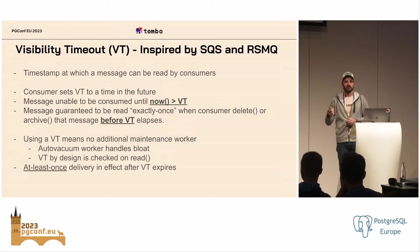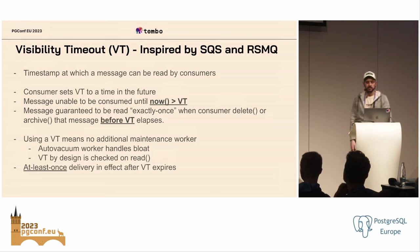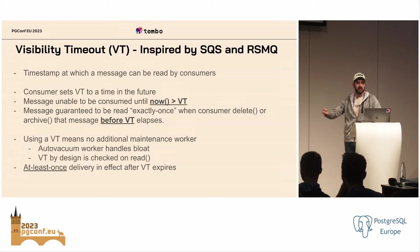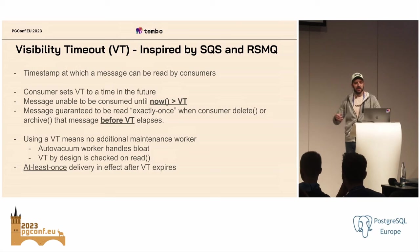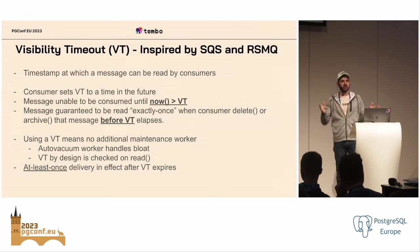You can come back and update the visibility timeout if processing is taking longer — you could say give me another minute to work with this message before I want it to become visible again. If your consumer doesn't communicate anything back to the queue, the visibility timeout will naturally expire without any external process, and the message becomes visible again. Once that visibility timeout expires, you're in at-least-once delivery mode — but you don't get into at-most-once where you could have data loss.